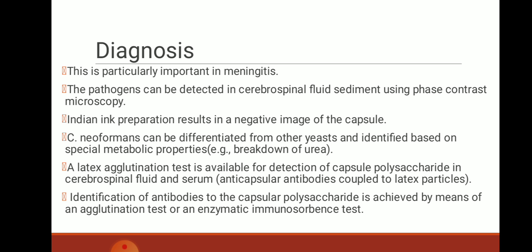Diagnosis is particularly important in meningitis. The pathogens can be detected in cerebrospinal fluid sediment using phase contrast microscopy. Indian ink preparation results in a negative image of the capsule. It can be differentiated from other yeasts on the basis of special metabolic properties, for example breakdown of urea. A latex agglutination test is available for detection of capsular polysaccharide in cerebrospinal fluid and serum. Identification of antibodies to the capsular polysaccharide is achieved by means of an agglutination test or an enzyme-linked immunosorbent assay.